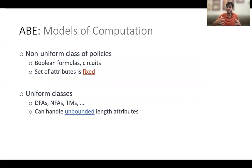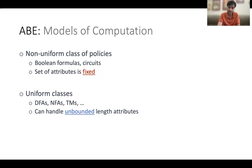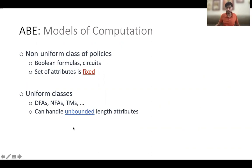Attribute-based encryption has been studied in two different models of computation for specifying the policy functions. The policy function can be specified either using a non-uniform computation class, such as Boolean formulas or circuits, or using a uniform class such as deterministic finite automata, Turing machines, RAM computation, and so on. In the non-uniform class of policies, the attributes that the policy function is going to read are fixed a priori. Whereas in the uniform class, we can actually handle an unbounded length of attributes, which is much more useful for practical applications.